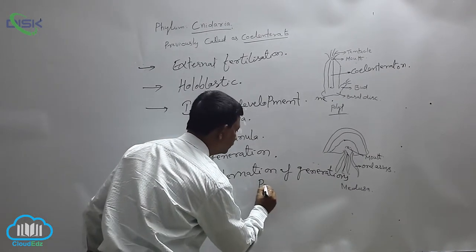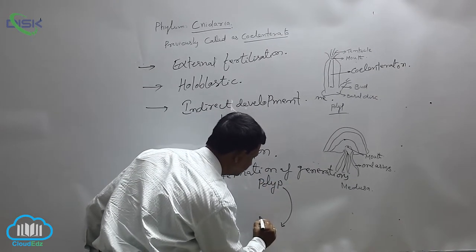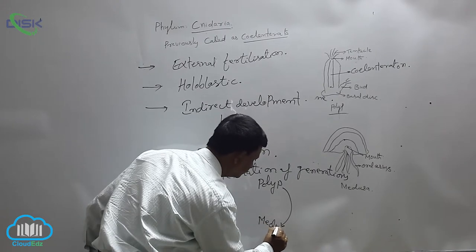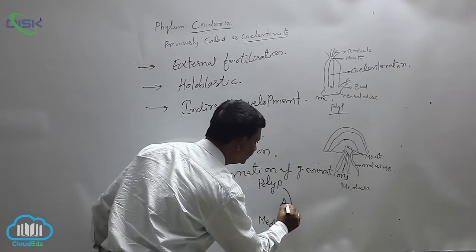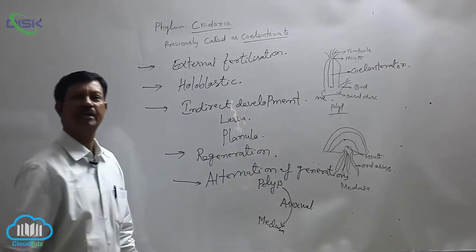For example, polyp produces medusa. Asexual reproduction takes place in polyp and they produce medusa forms.